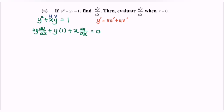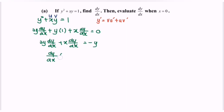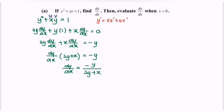Rewriting the situation: 2y·dy/dx plus x·dy/dx is equal to negative y. Factor out dy/dx, giving us (2y plus x)·dy/dx equals negative y. So finally, dy/dx is equal to negative y over (2y plus x).